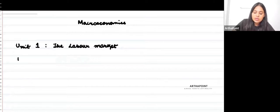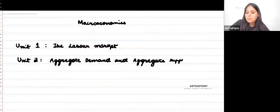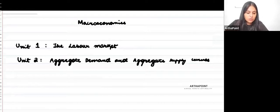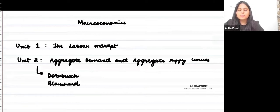Then in unit two, we would be talking about aggregate demand and aggregate supply curves. When it comes to aggregate demand and aggregate supply curves, we majorly have a few important chapters here. We have readings coming from Dornbusch. These are the two important readings that you would be covering.